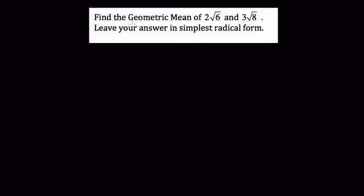In this problem, we're finding the geometric mean of two numbers: 2 times the square root of 6 and 3 times the square root of 8, and we want to leave the answer in simplest radical form. I want to go through the process of solving for geometric mean and then give a little background on what it is and why we use it towards the end of the video. So let's start with how to solve this.